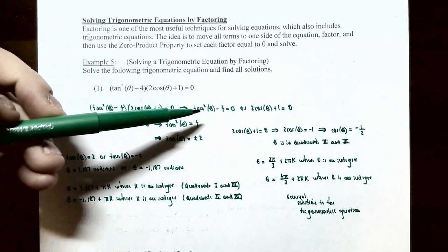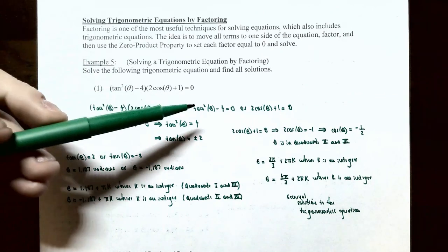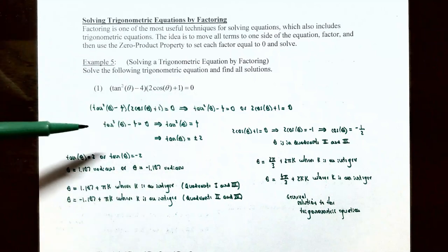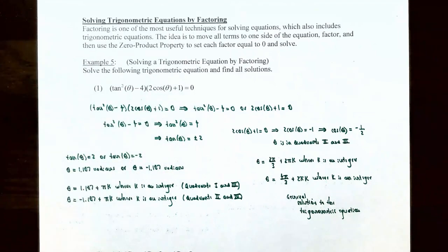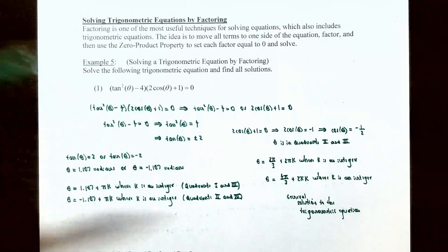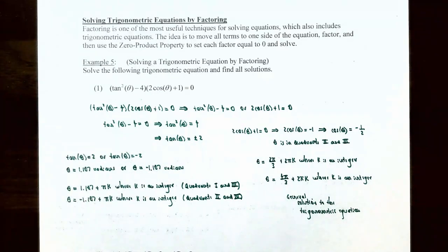For tan²θ − 4 = 0, we need to isolate tanθ by itself on one side of the equation. Add four to both sides to get tan²θ = 4. Now take the square root on both sides — remember the plus or minus — so the square root of tan²θ is tanθ and the square root of four is two. So tanθ = ±2, giving us two equations: tanθ = 2 or tanθ = −2.